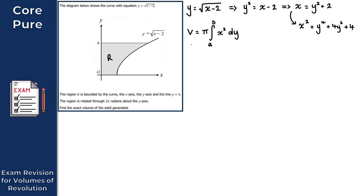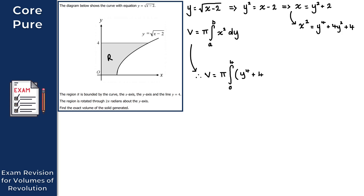We now have everything needed to find this volume. V equals π times the integral. Using our diagram, the lower limit is 0 and the upper limit is 4. So we integrate x squared — which is y to the 4 plus 4y squared plus 4 — with respect to y, going from 0 to 4.